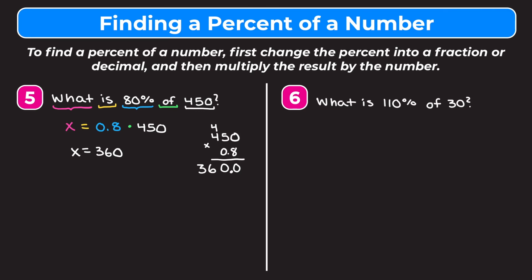We want to mentally check that this makes sense. 50% of 450 is half of 450 — half of 400 is 200, so half of 450 is a little more than 200. 80% is more than 50% but less than 100%, so our answer should be somewhere between about 225 and 450. Our answer of 360 is between those, so we know we're in the right ballpark.